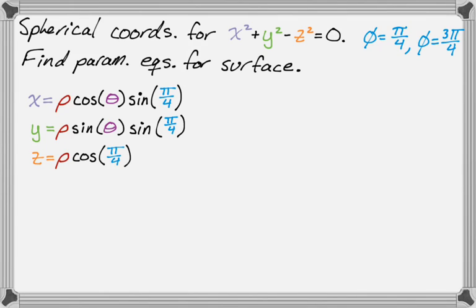All right, so I chose to use pi over four instead of three pi over four. I could write another set of equations where I just replace all the pi over fours with three pi over four. But what I'm going to do instead is just let my parameter vary in a convenient way. So theta, I need to get the whole cone. So I want theta to go from zero to two pi, almost always the case for theta.